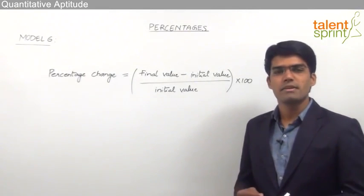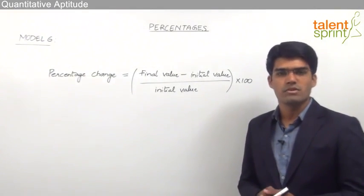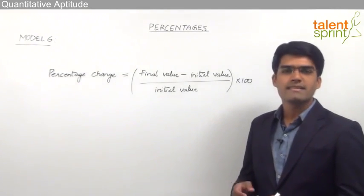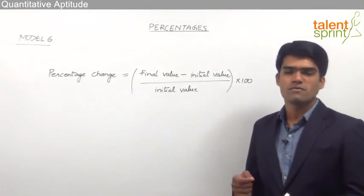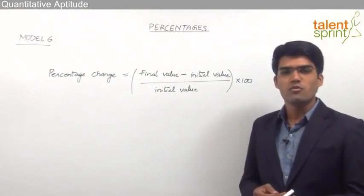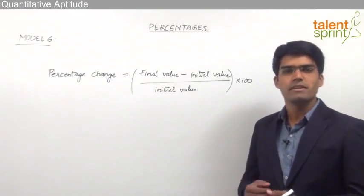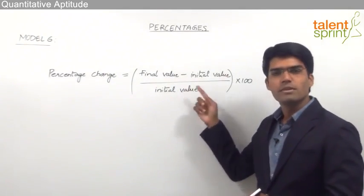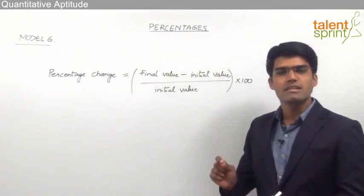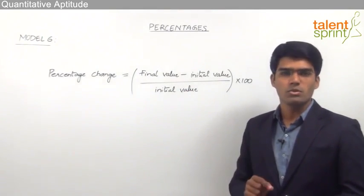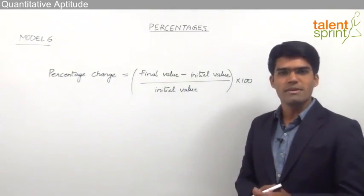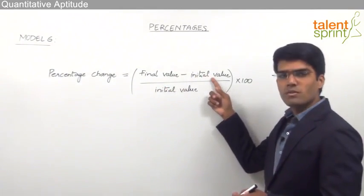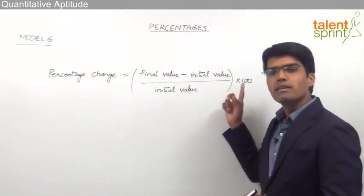Let us say the sales of a company in two different years is given to us. For example, sales of a company in the year 2001 is x, and the sales of the company in 2004 was y. Then to find out the percentage change between these two values, the answer is: final value minus initial value, by initial value, into 100. So the percentage change from 2001 to 2004 is: sales in 2004 minus sales in 2001, divided by sales in 2001, into 100.